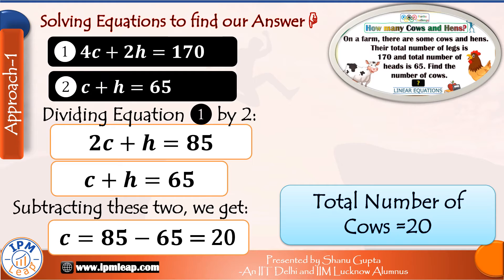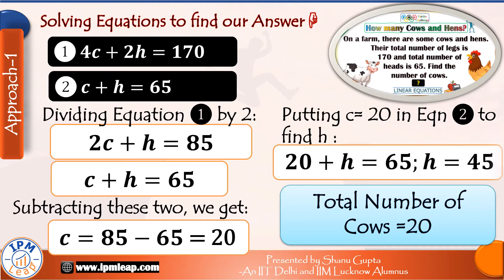We can stop at this step, but let us also find the value of h. Putting c equals 20 in equation number 2, we get 20 plus h equals 65. Therefore, the number of hens h equals 45.